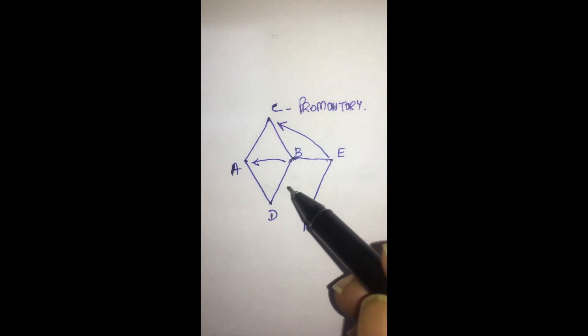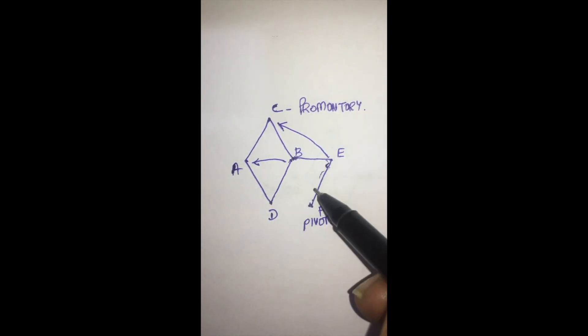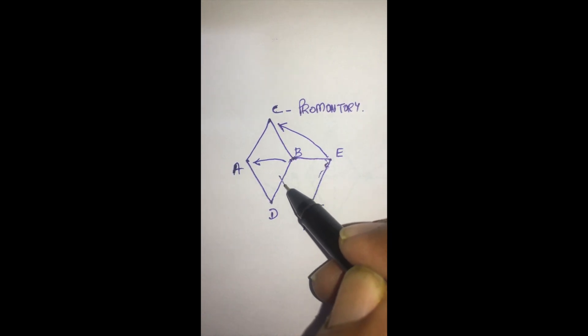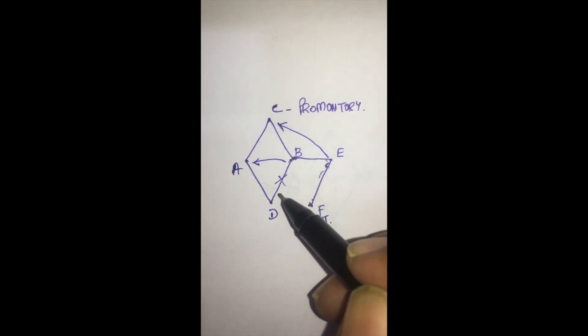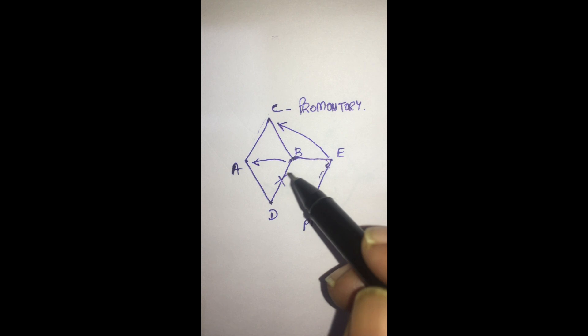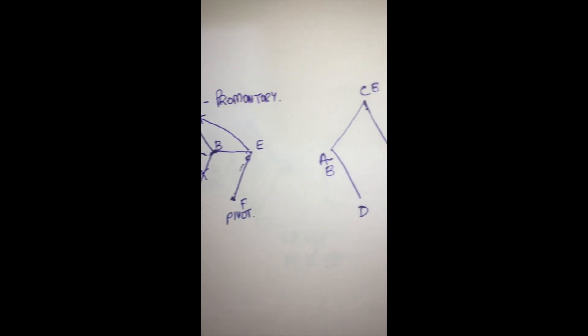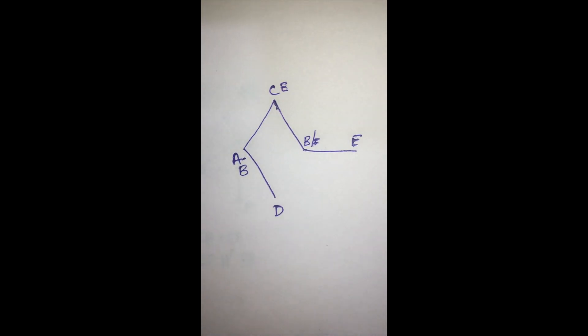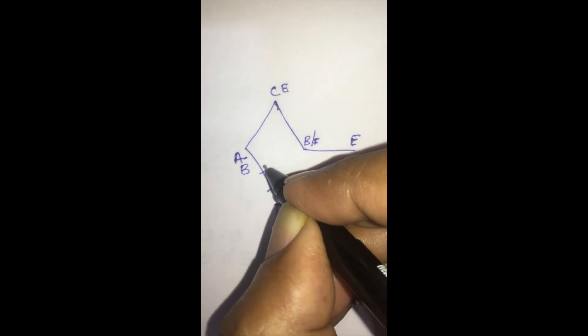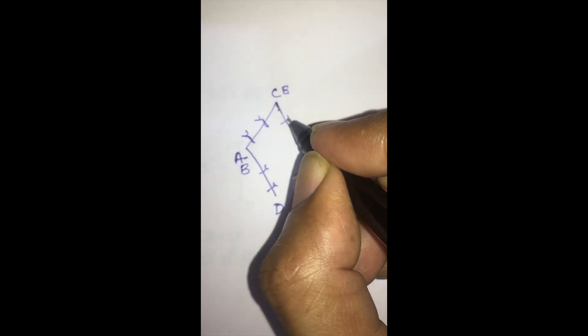What is the resulting suture line after raising and insetting the flap? Remember, the side that is adjacent to the flap is removed. The flap inset is done on the three sides shown, and this is the leading edge of the flap. Once the flap is inset, this is the suture line. The point B is sutured to point A, the point E is sutured to point C, and the point F is sutured to point B.